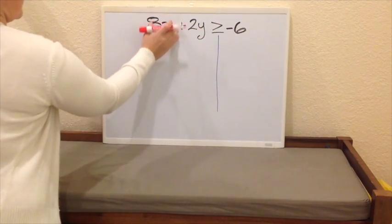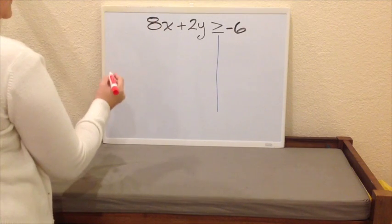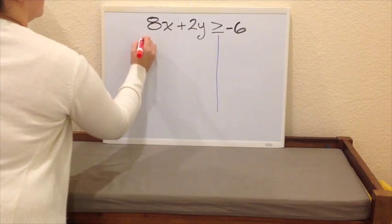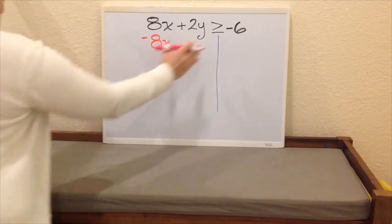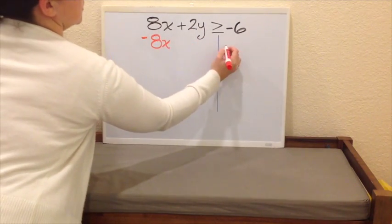So we're going to start by cancelling our 8x. How do we get rid of 8x? By subtracting 8x. And what we do to one side, we have to do to the other.